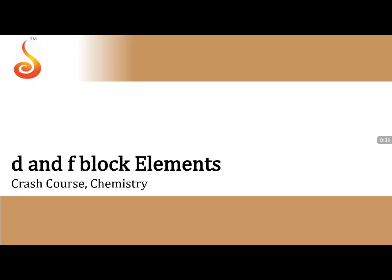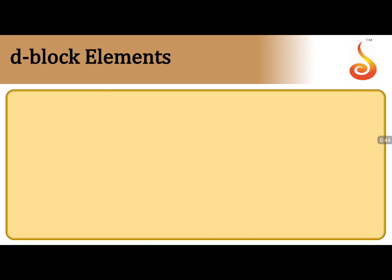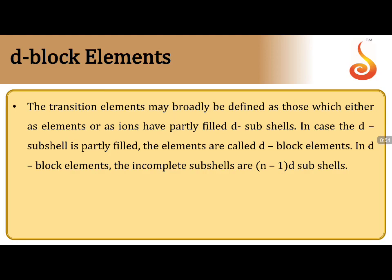Let us start our journey with the d-block and f-block elements. D-block elements are those elements in which the differentiating electron enters into the penultimate shell d-orbitals. These are also called transition elements. Transition elements may be broadly defined as those where either the elements or their ions have partially filled d-orbitals. If the d-subshell is partly filled, the elements are called d-block elements.